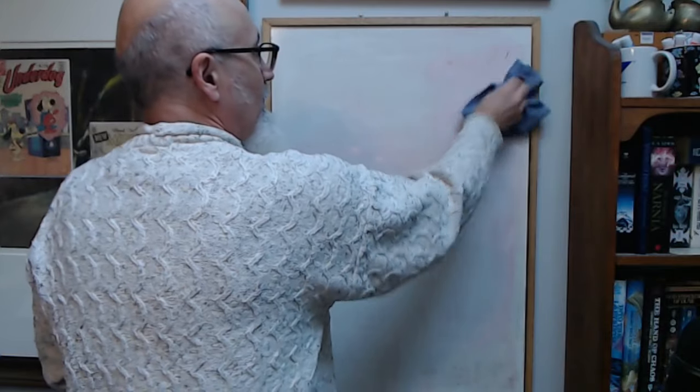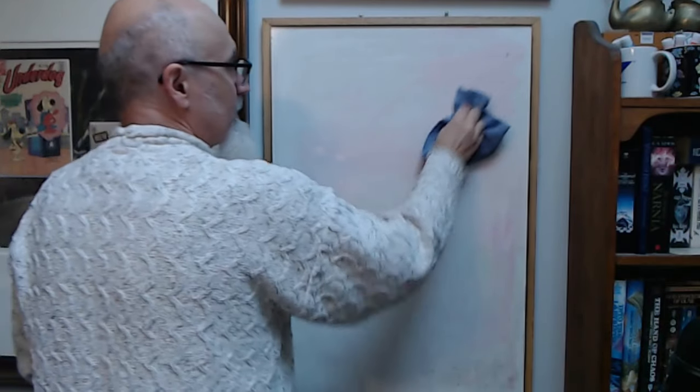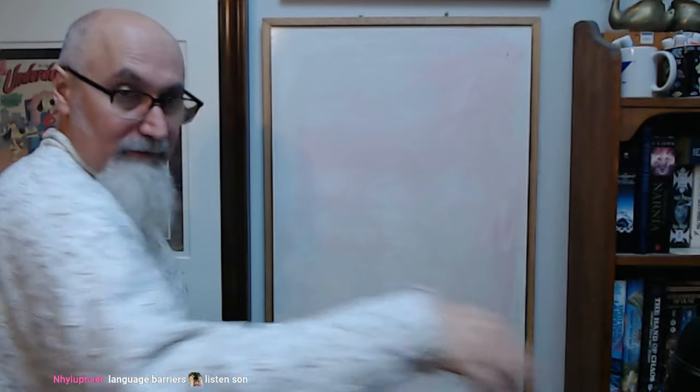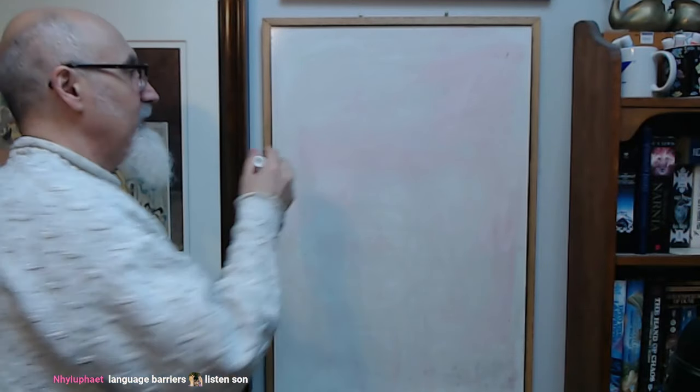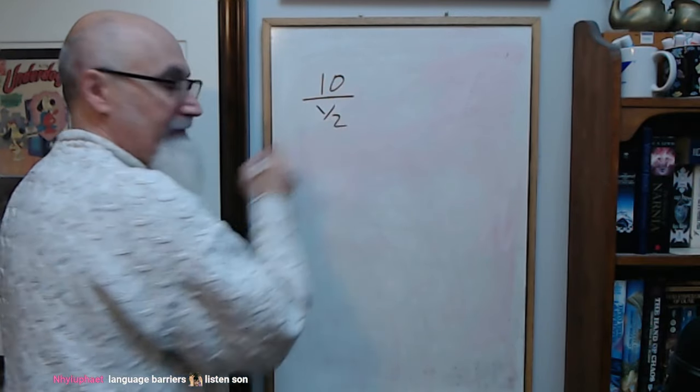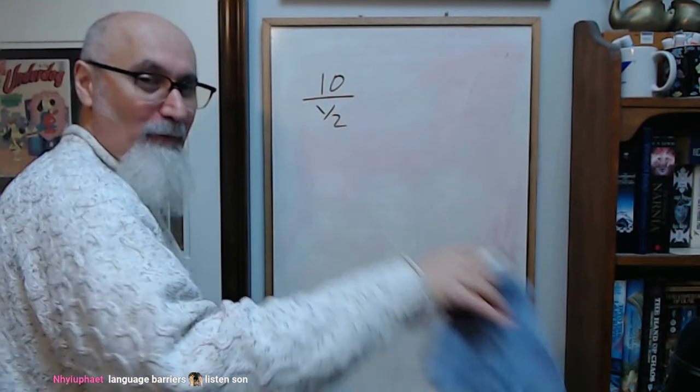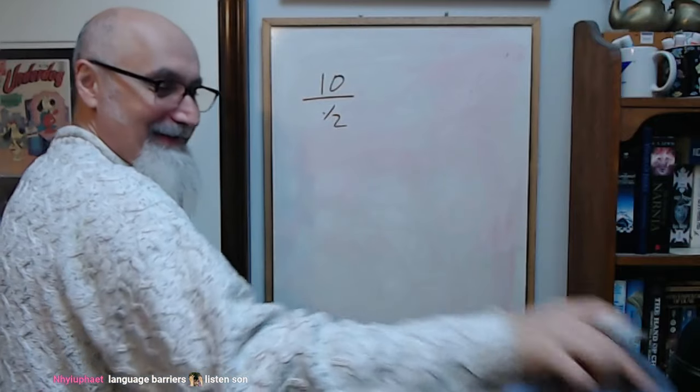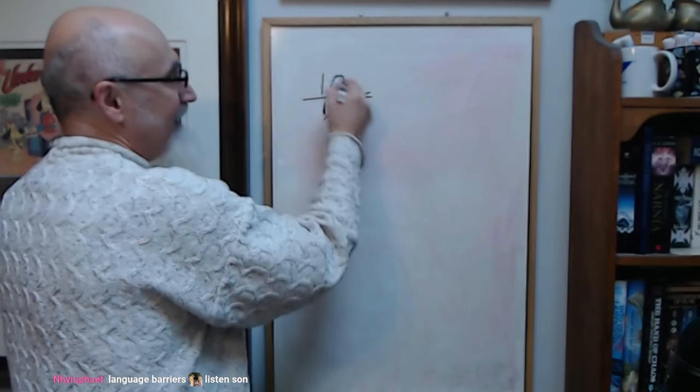Maybe the best way to learn how division by half works is the following. If you take ten and divide it by a half, right, what is—I'll write it sideways.